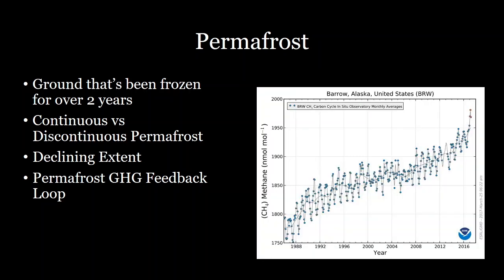We can see here the concentration of methane being emitted in northern Alaska, and it's been steadily increasing as we have more and more melting. This is really significant because methane has 25 times more potential to act as a greenhouse gas than CO2 does, so it's a very volatile molecule in our atmosphere in terms of greenhouse gases. If we have permafrost that's emitting a lot of methane because it's being decomposed and melting, that could be a serious issue.